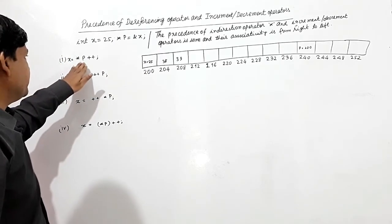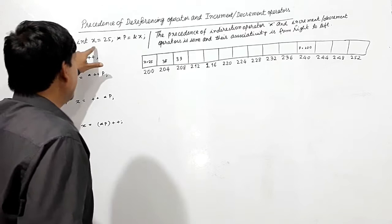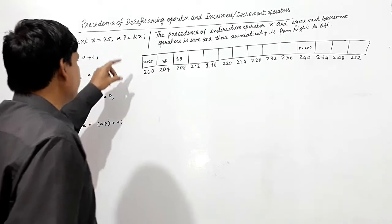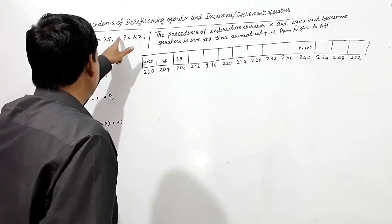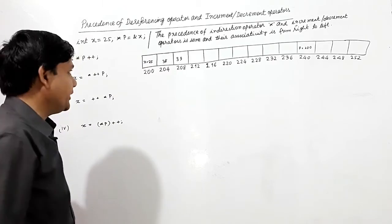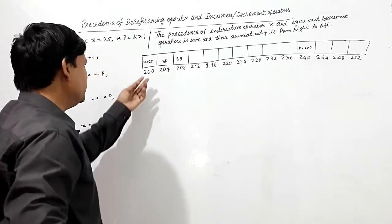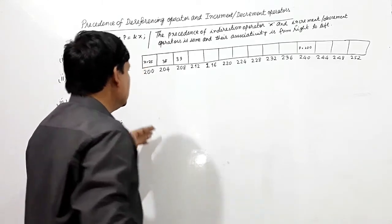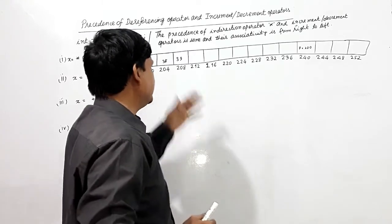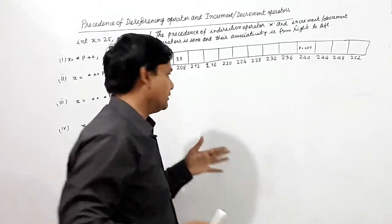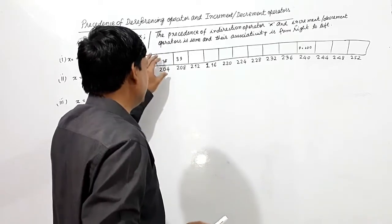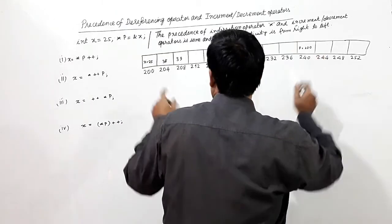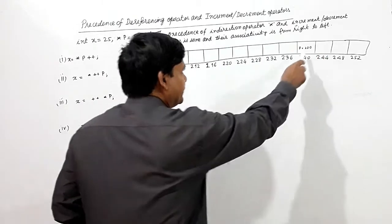First, consider `x = *p++`. Before that, x is a variable of type integer which has been assigned the value 25, and p is a pointer to integer which is holding the address of x. I have assumed that x is at address 200, holding value 25, and then at 204 and 208 some other values are there — I am assuming 38 and 39. Pointer p is holding the address of x, that is 200.